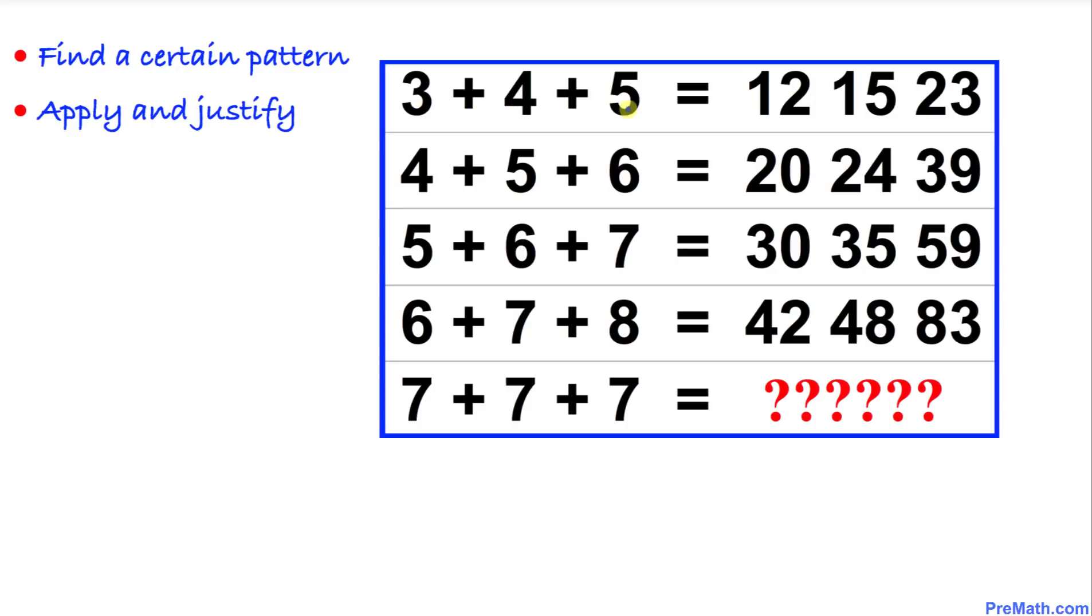So let's start working with the first row, 3 plus 4 plus 5. Let's look at 3 and 4. If we multiply them, we are going to get 12. And if we multiply 3 times 5, we are going to get 15. And likewise, in the second row, 4 times 5 is going to give us 20.